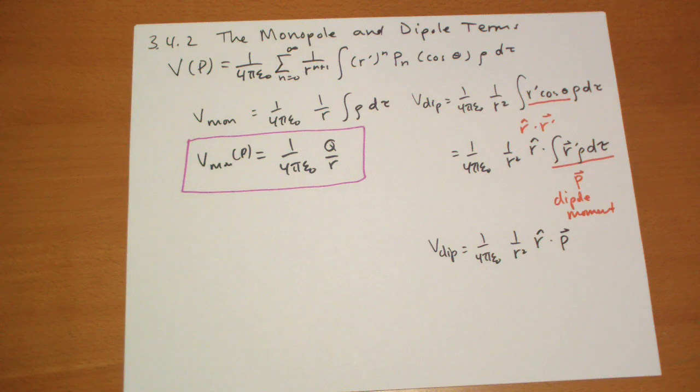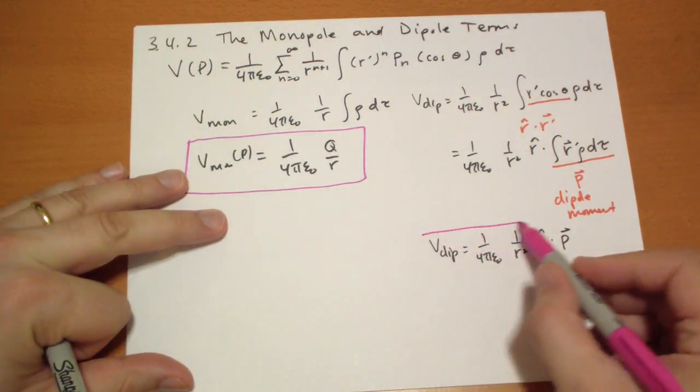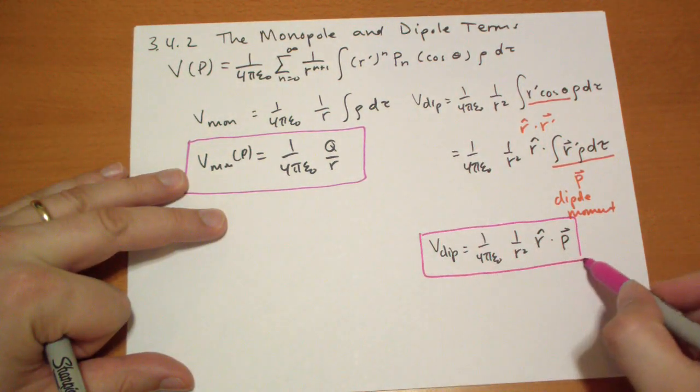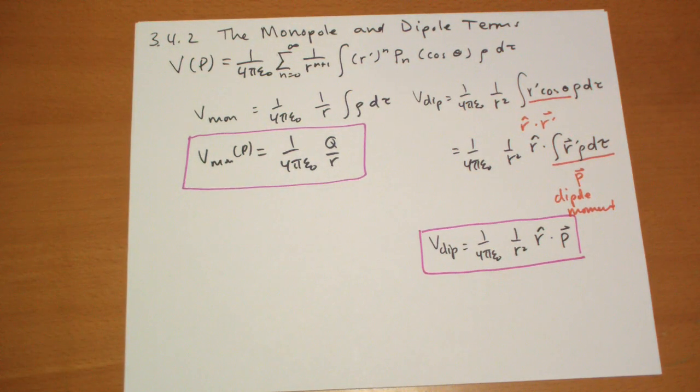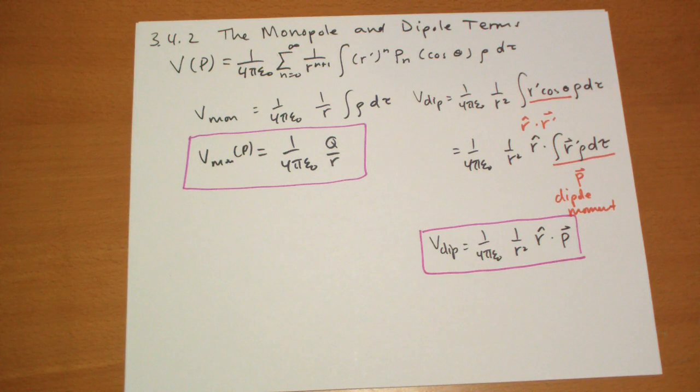So this is actually a really useful equation. Once again, we've eliminated r prime. We have a single value to describe the configuration of charges, the dipole moment. And we can calculate quickly how strong the potential is. And then from the gradient of that we can get the electric field in which way it points.